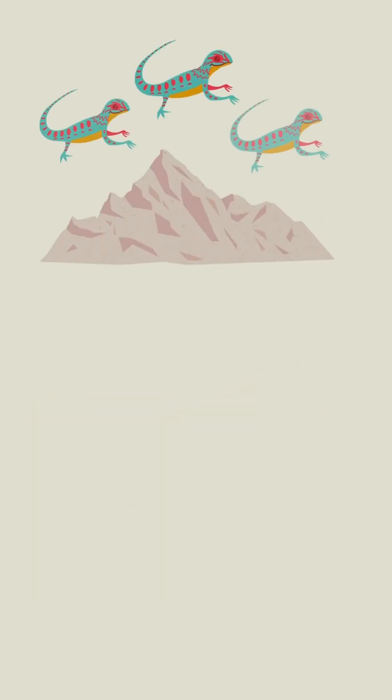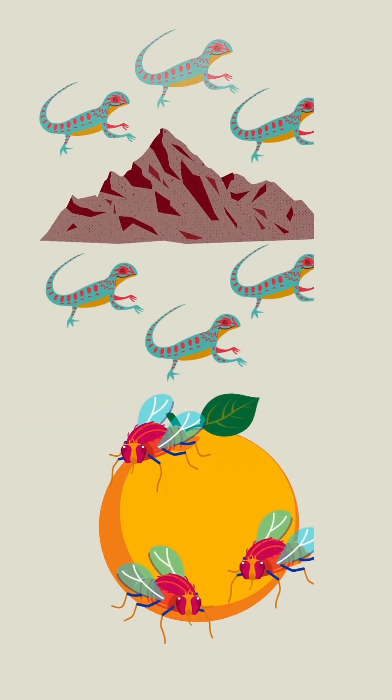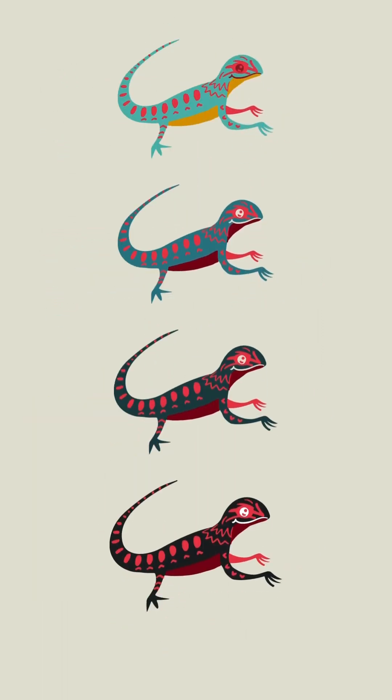In both cases, speciation is a gradual process, taking place over many generations. It's one example of the evolutionary process.